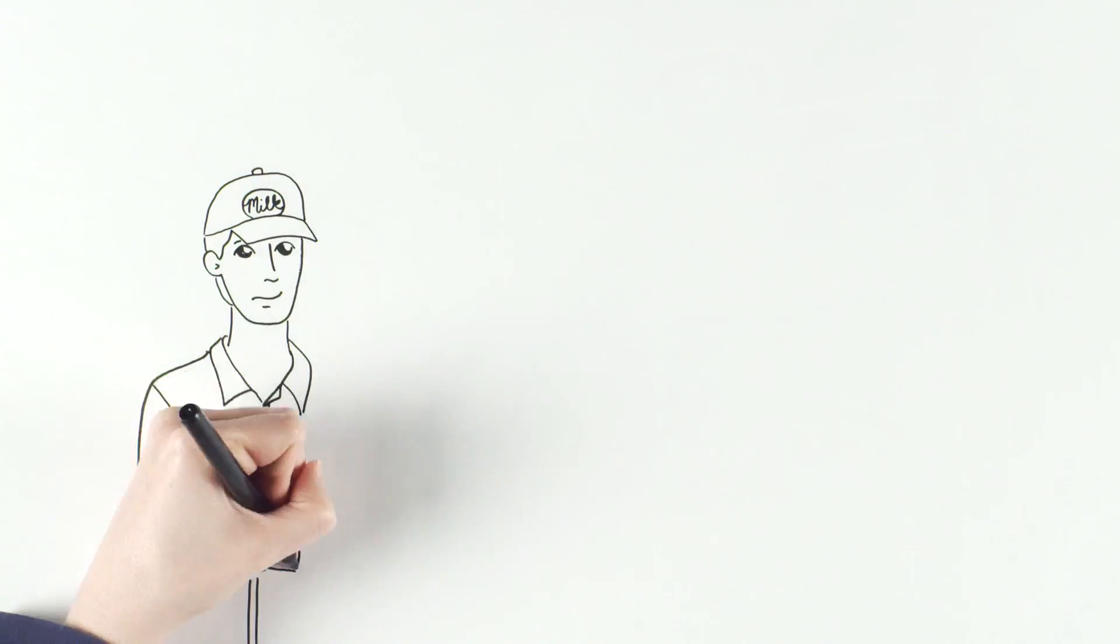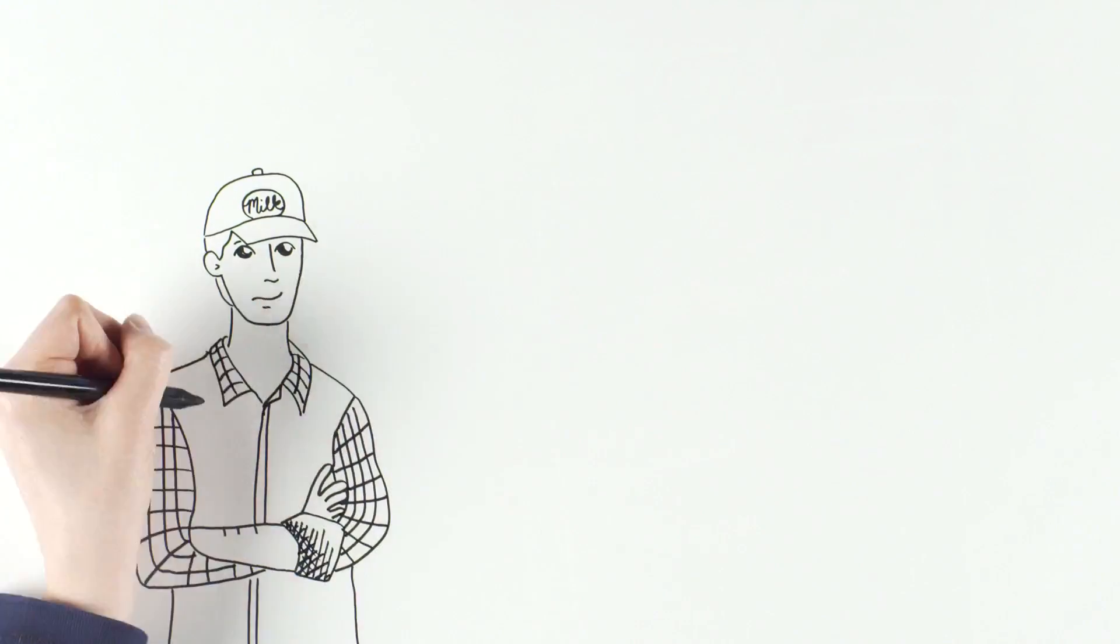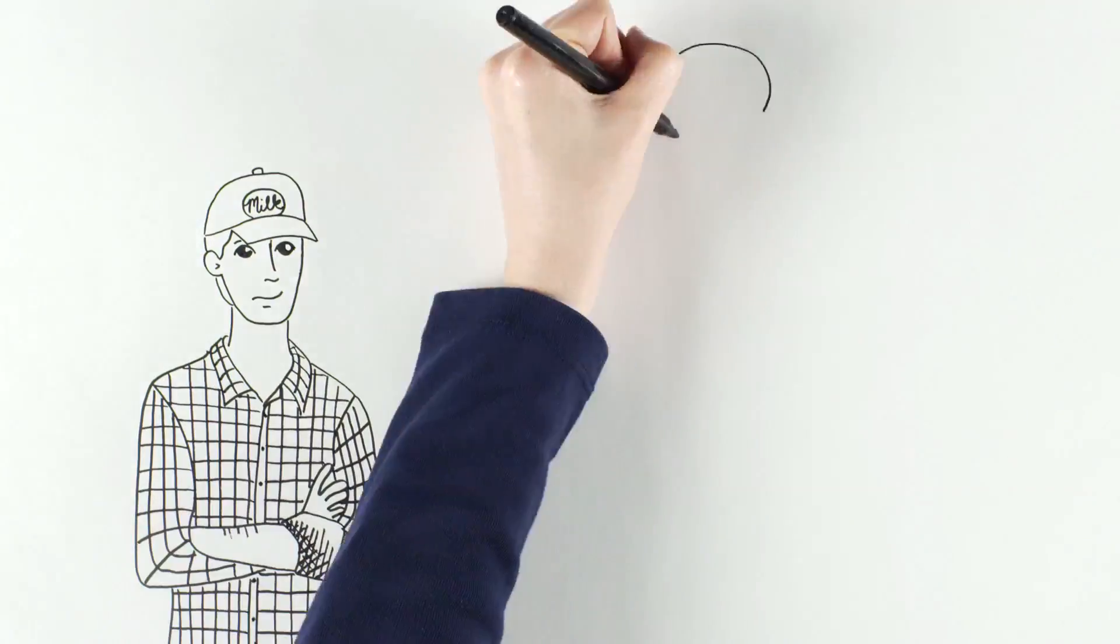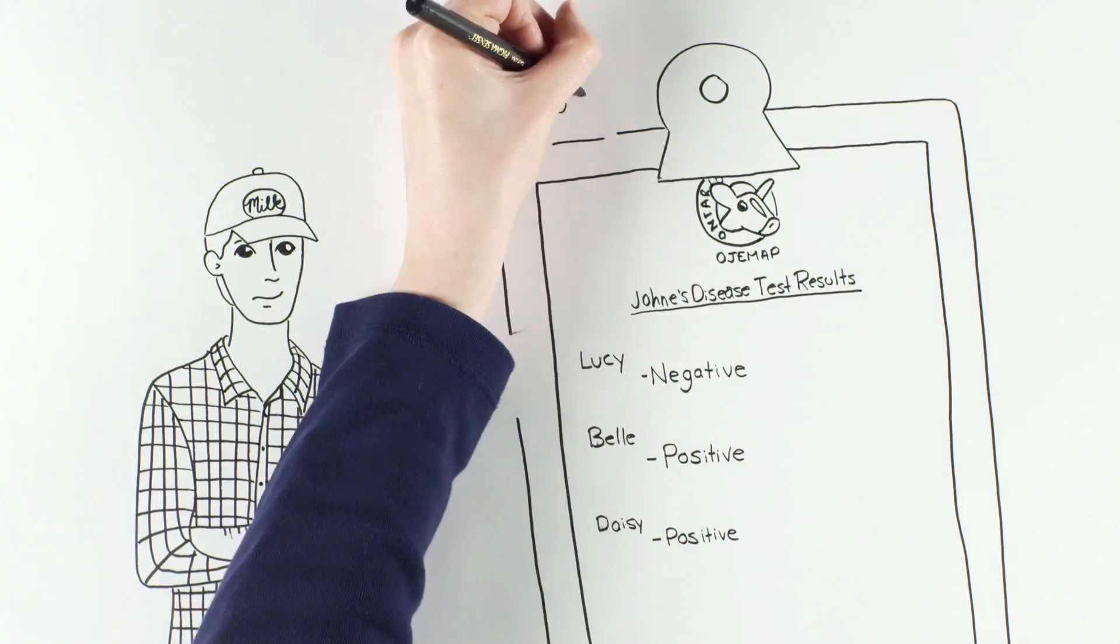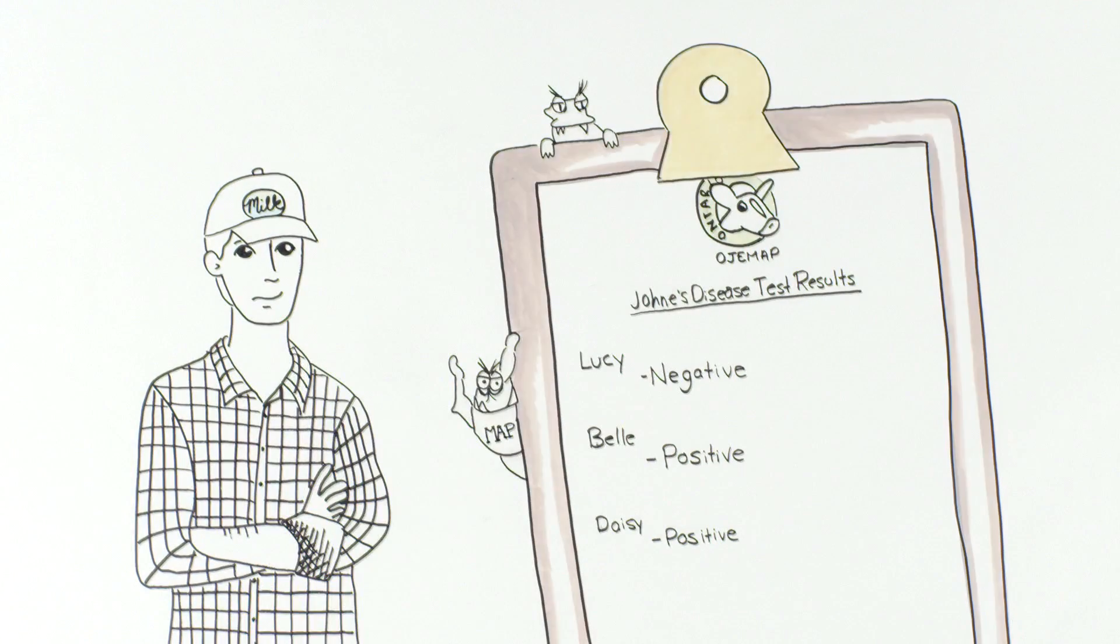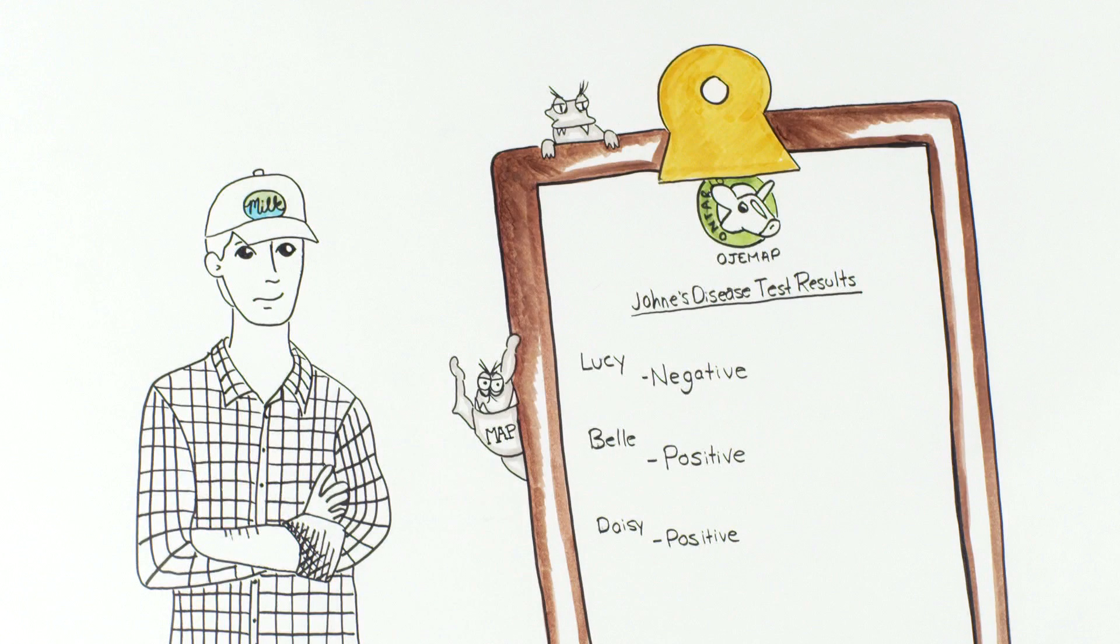Bob is part of the Ontario Johne's program, so he did a herd test to start. But as Bob learned the hard way, the silent spread of MAP makes it difficult to test for. So the real key to reducing Johne's is preventing its spread.